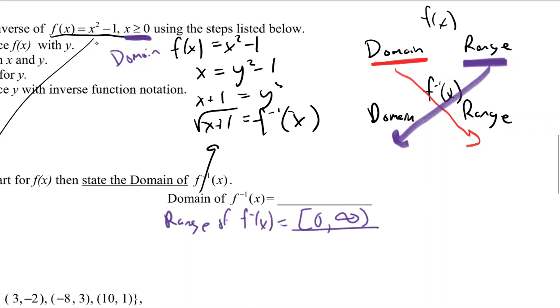And then the range of this one - this is just x squared shifted down one - so that would be negative one to infinity. So its range of the function becomes the domain of the inverse. You've got multiple paths to get that answer, but it's kind of good to know all of them so that you have some choices there.